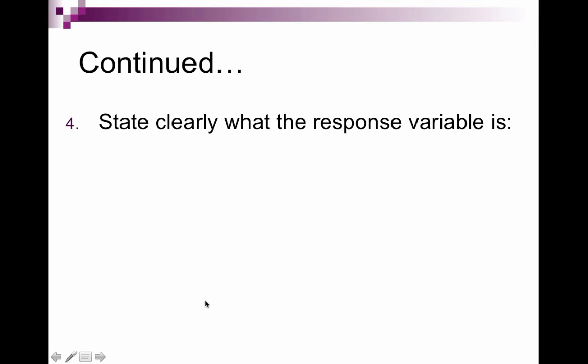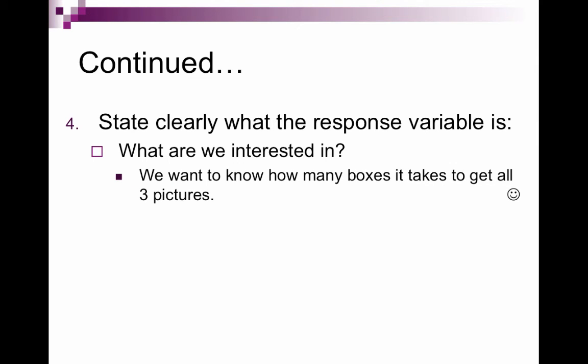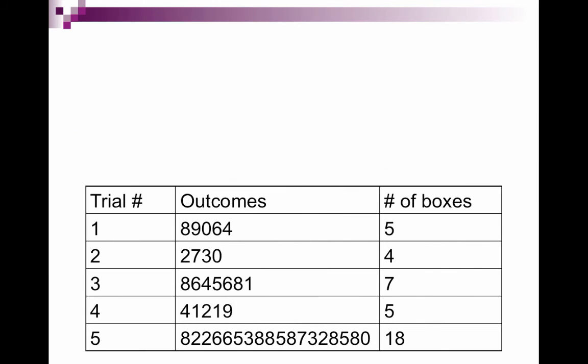The fourth step is to clearly state what the response variable is. The response variable is what we are interested in. In this case, we want to know how many boxes it takes to get all three. So in that first trial, it took five boxes of cereal.